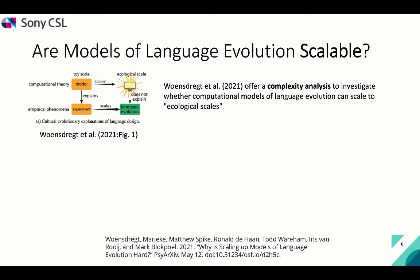The inspiration for this talk comes from a challenge posed by Marieke Woenstrecht and her colleagues last year, who offered a complexity analysis to investigate whether computational models of language evolution can scale to ecological scales. What that means is that current computational models typically have only a very small population of artificial language users called agents and only small languages consisting of a couple of words, while natural languages have tens of thousands of words and population sizes up to millions of people.